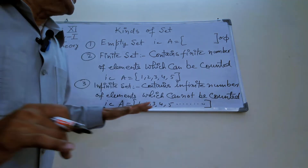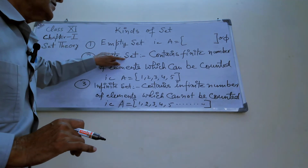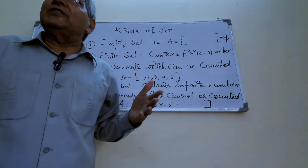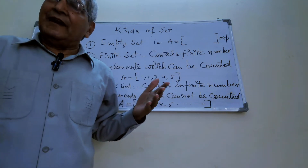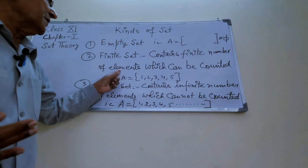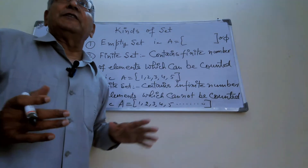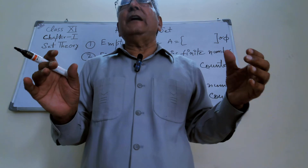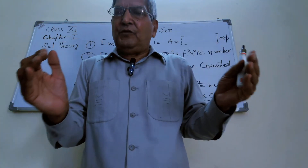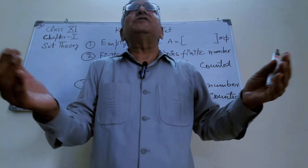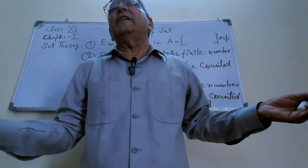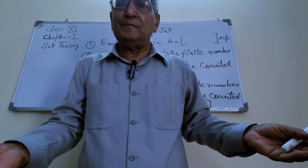Second type: finite set. A finite set contains a finite number of elements which can be counted. If elements are written in a set and we can count the elements, then it is finite. If we cannot count the elements, then it is not finite — then it is infinite.